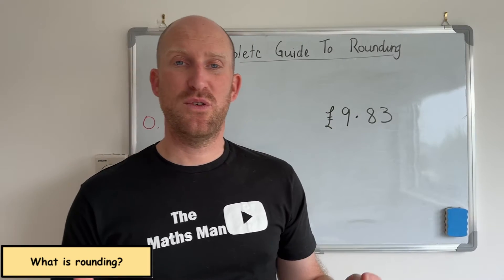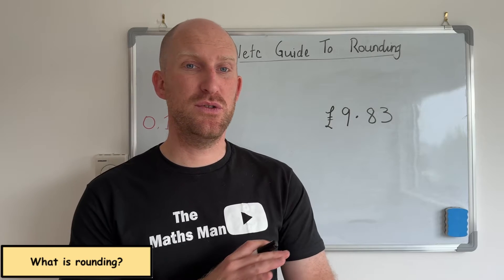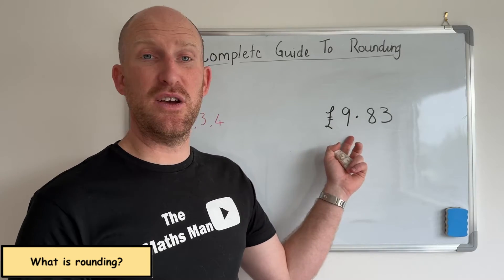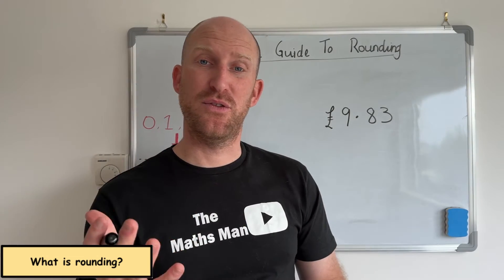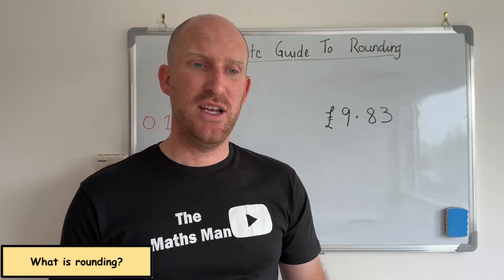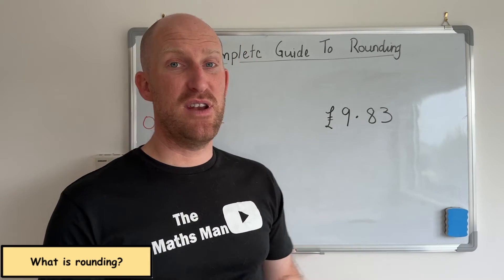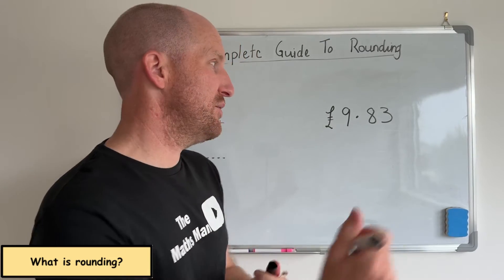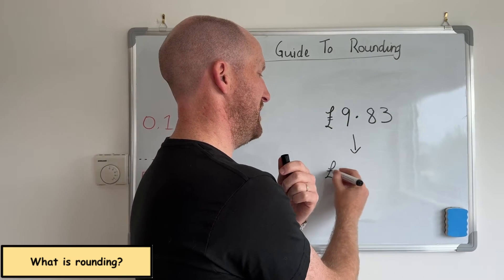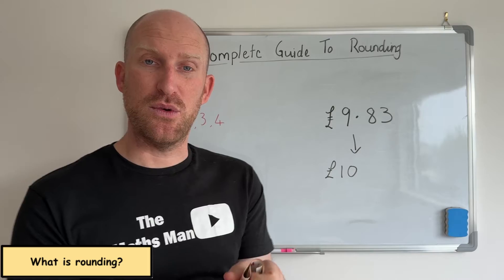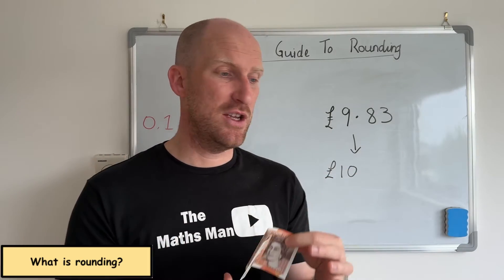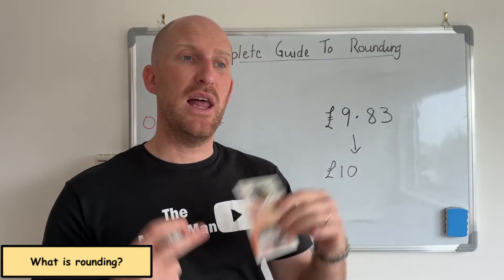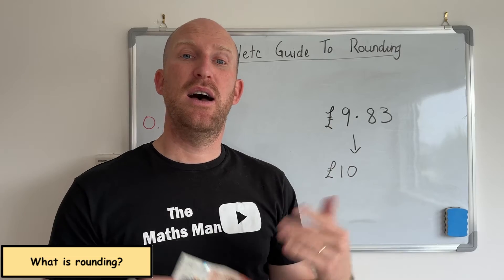So first of all, what is rounding? Rounding is a maths skill that we use in everyday life. Here's a prime example: if I go to the shop and I'm buying something for £9.83, it's very unlikely that I'll have exactly £9.83 in my pocket. So what I would do is use my rounding skills to give the person £10, and then they would give me the change. That's an example of taking a number and rounding it to a larger number so that I have enough money.